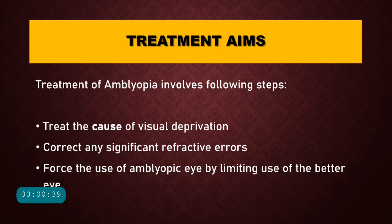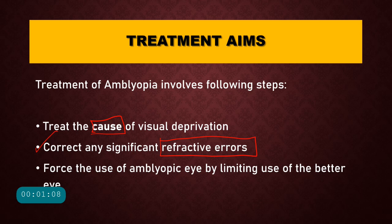There are three basic aims for the treatment of Amblyopia. The first aim is treating the cause of Amblyopia. The second aim is to correct any significant refractive error. The third aim, which is the most important, is to force the use of the Amblyopic eye by limiting the use of the better eye.